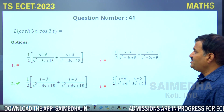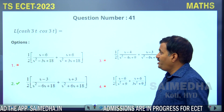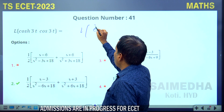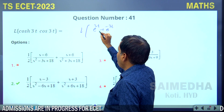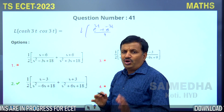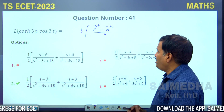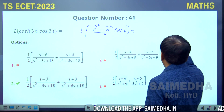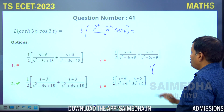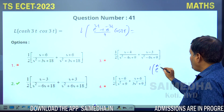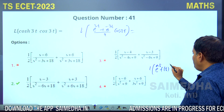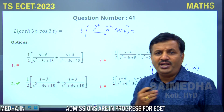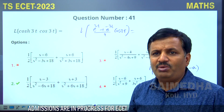Coming to Laplace of cosh(3t)·cos3t. We write cosh(3t) = (e^{3t} + e^{-3t})/2 using the cosh formula. Now we apply the first shifting theorem: Laplace of e^{at}·f(t) = F(s-a).